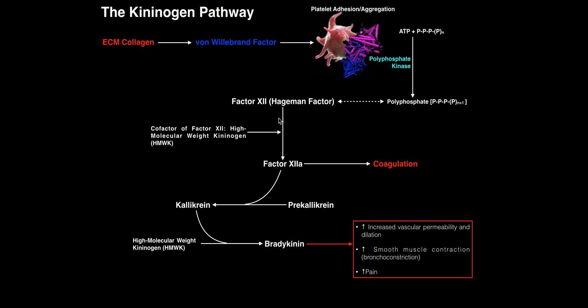High molecular weight kininogen is not only a cofactor for Factor XII activation — it is also a substrate for kallikrein. Kallikrein cleaves HMWK in such a way that it releases a molecule called bradykinin. Bradykinin is important in the inflammatory response: it causes increased vascular permeability and vasodilation to allow immune cells to reach the area, increased smooth muscle contraction in the lungs causing bronchoconstriction relevant to allergic reactions, and pain.